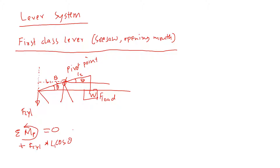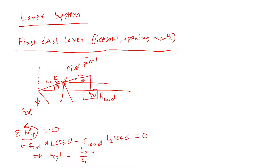With respect to the pivot point, the load will make a counter-clockwise moment, which is negative: minus F load times L2 cosine theta. Setting the sum equal to zero and solving for F cylinder, we get F cylinder equals (L2 / L1) times F load. Using a first-class lever, we don't gain much advantage.